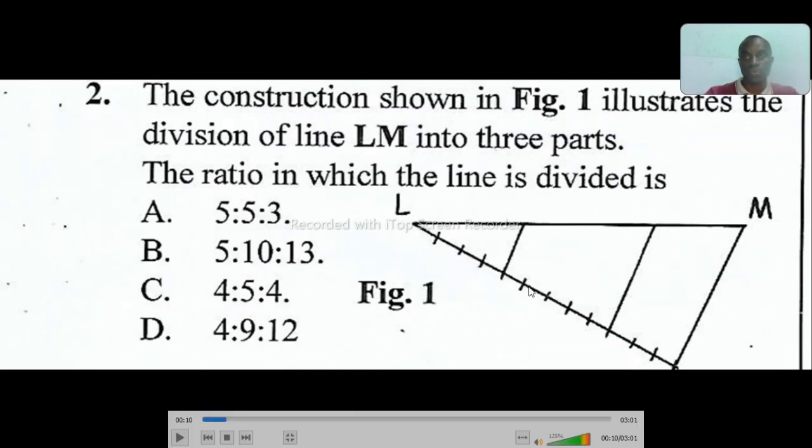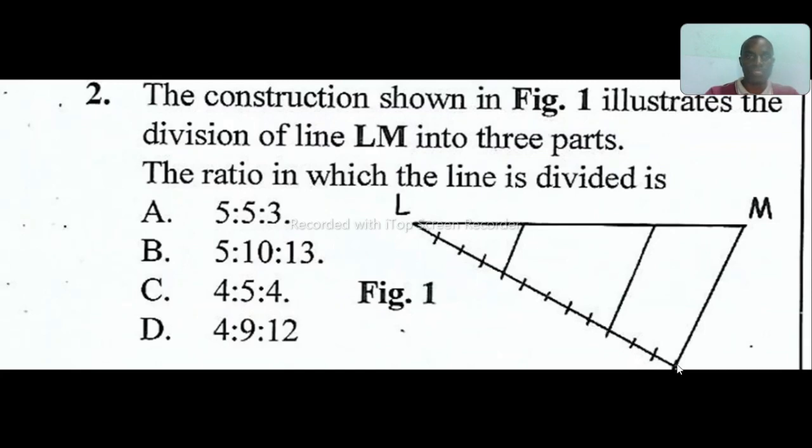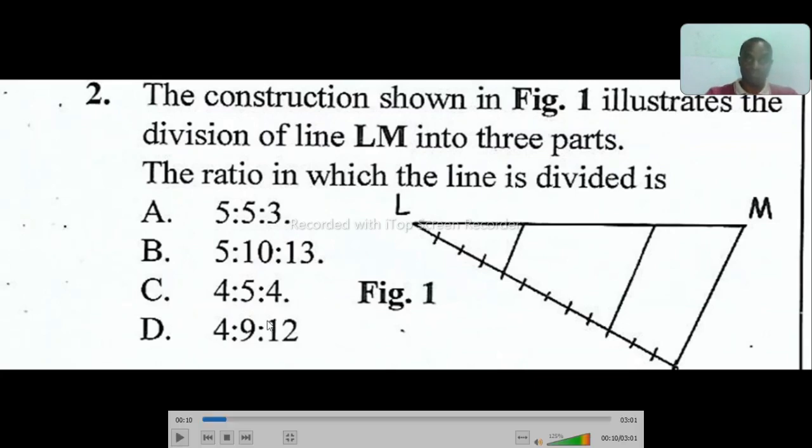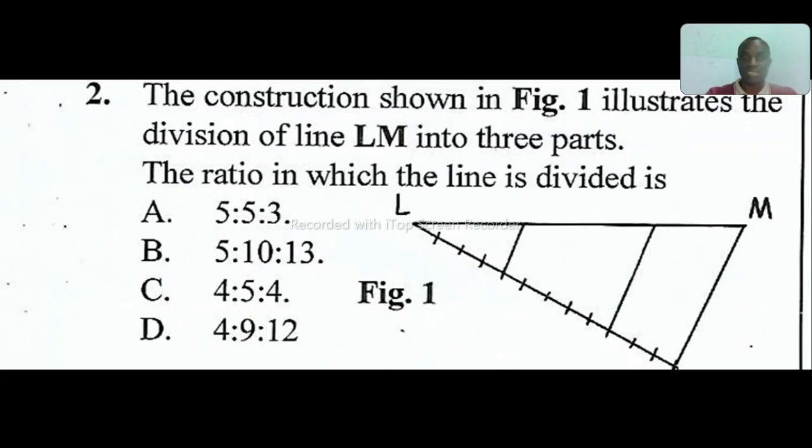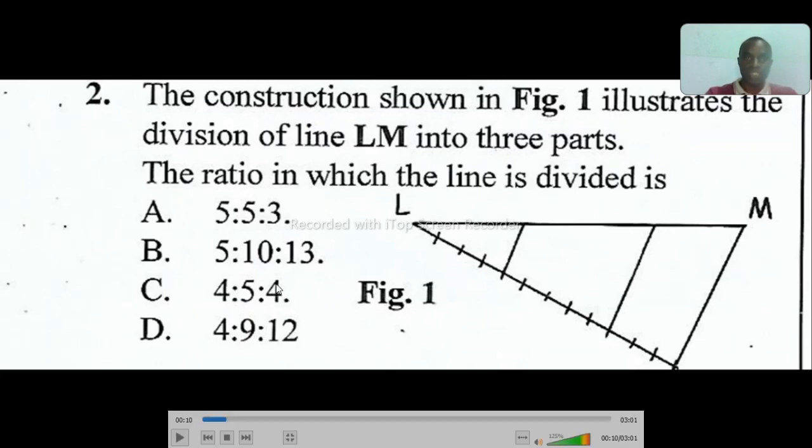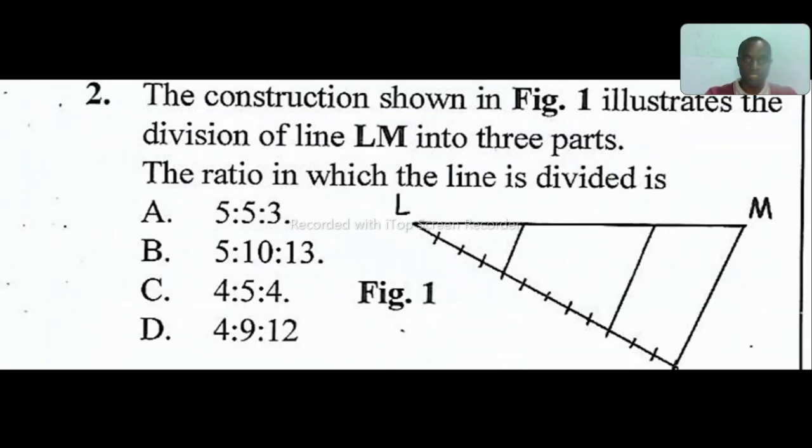Question number two: The construction shown in figure one illustrates the division of line LM into ratio. Just count them. We have four: one, two, three, four. Then ratio one, two, three, four, five. The correct answer is D because by the time you reduce these numbers, you get the correct ratios.